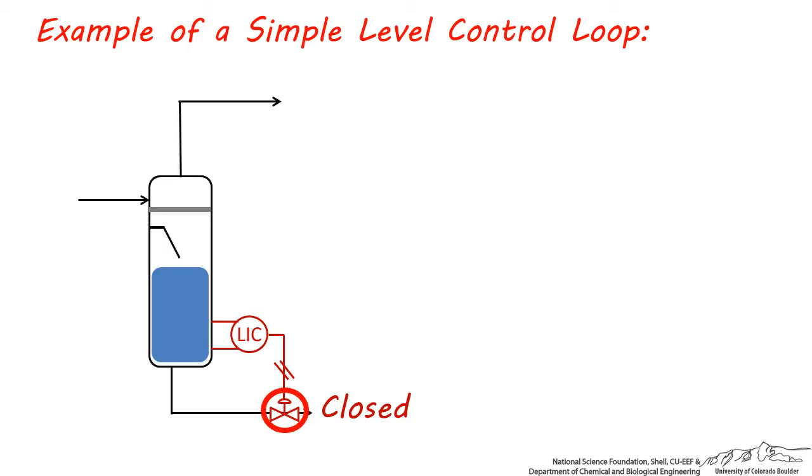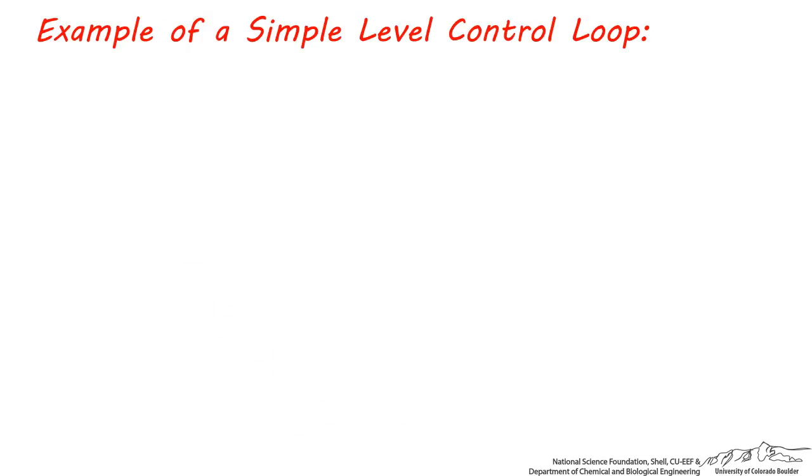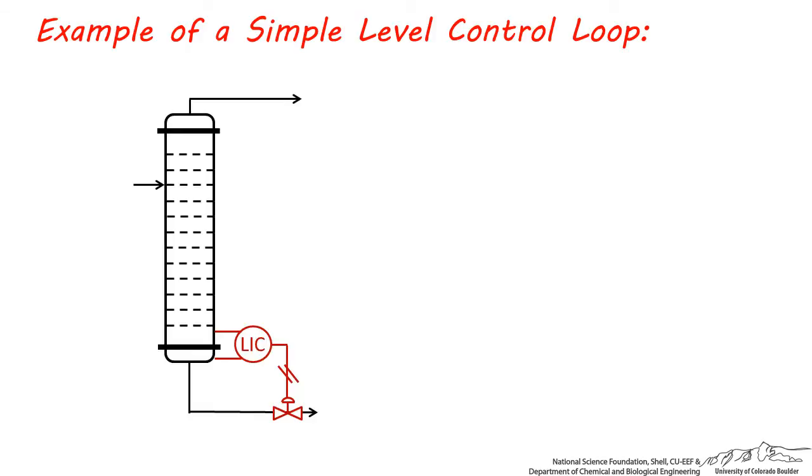So this is how a simple level control loop looks for a flash vessel, and not surprisingly, it's very similar for a distillation column. Remember, the bottom liquid holdup space for a large distillation column can be between 5 and 10 feet, according to most heuristics. Like flashes, this liquid level cannot exceed or go below a specified level. Otherwise, the column will not separate components properly.